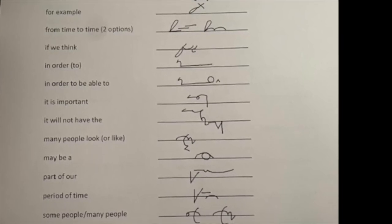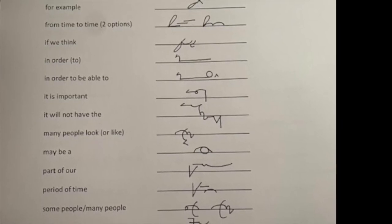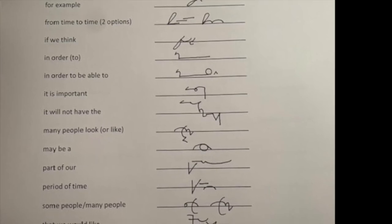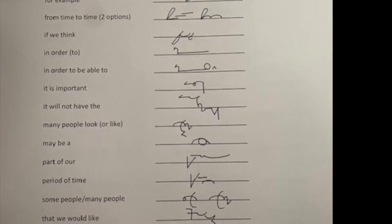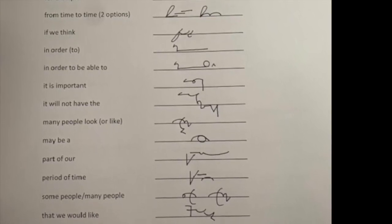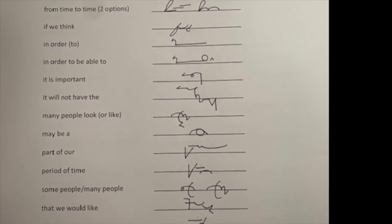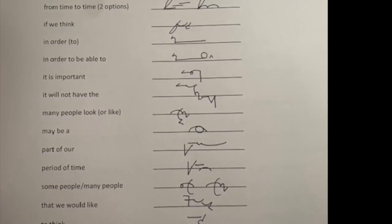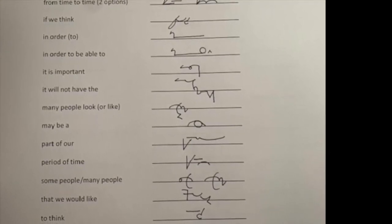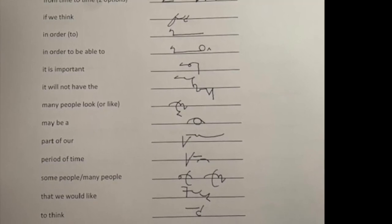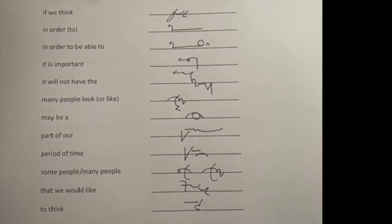Next one, it is important. So, S goes underneath so that it can go inside the curve of the M and of course important we know is a special outline. We've drilled it. It will not have thee. Again, five words all joined together far faster than writing two or three different outlines. Now, we're very familiar with the phrase many people now but if we join a K to the end of the PL blend for people it can say many people look and it can also say many people like and again believe me the sense of the sentence will tell you which one it is.